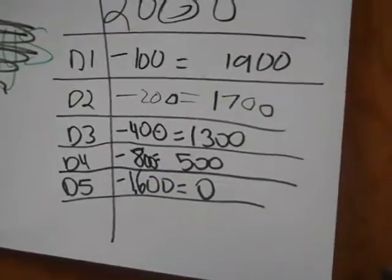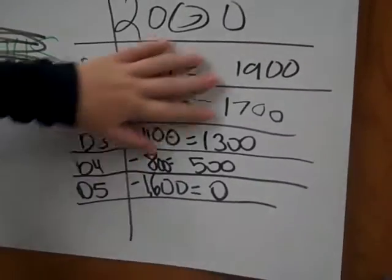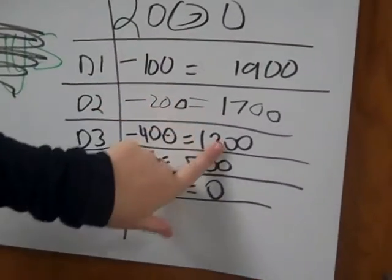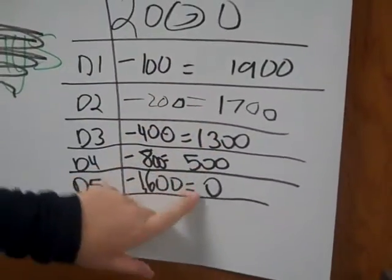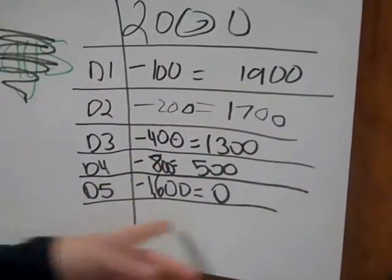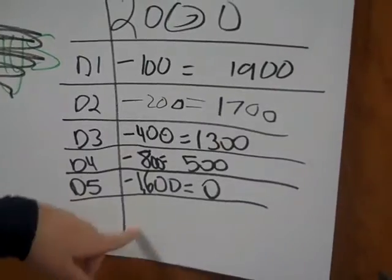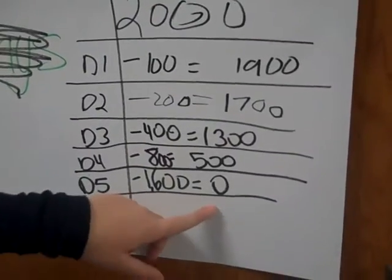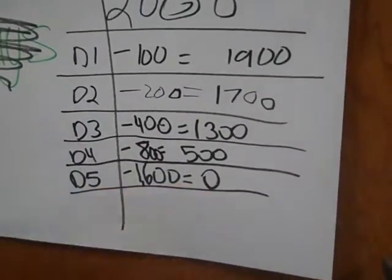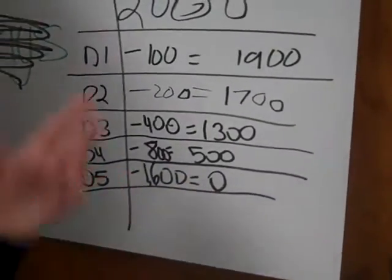Okay, so as you can see, as we keep on going, we subtract until it equals 0 on day 5, which is minus 1,600. So that's it — the answer is day 5, 5 days.